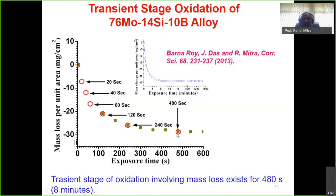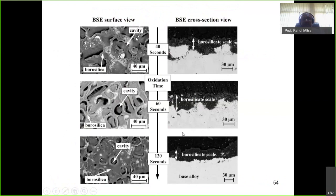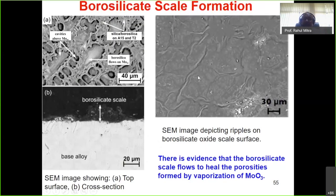Transient oxidation behavior was studied by observing mass loss with time at 1150°C. After about 250–480 seconds (~8 minutes), mass loss stabilized — it takes approximately 8 minutes to form a stable scale. Initially cavities form due to MoO3 vaporization, then the borosilicate scale forms and covers those cavities. Time-interval micrographs confirm this progression. The borosilicate scale has some fluidity — it is in a semi-solid state — so it can undergo viscoplastic flow and cover the porosities created by MoO3 vaporization, providing protection.